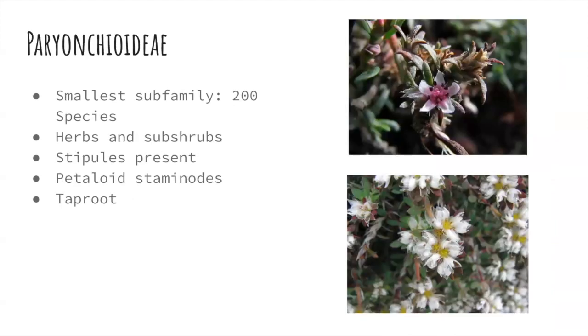The second subfamily, Alsinoideae, is the smallest subfamily, containing only 200 species. It is found as herbs and subshrubs, has stipules present, petaloids, staminoids, and taproot.